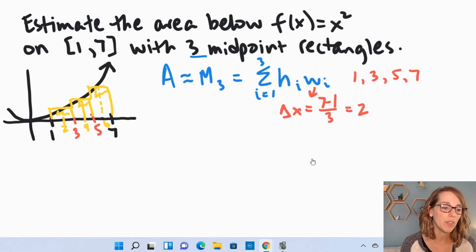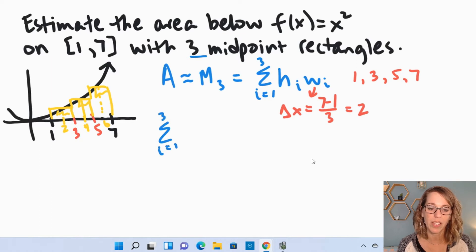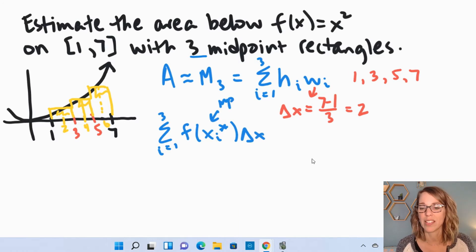So as I continue to put this into my summation, I've got i equals 1 to 3. My height is my function value, so that's going to be f of x sub i star, that's my sample point. This is going to be midpoints for this example, and then delta x. Xi star are the midpoints. So my xi star are at 2, 4, and 6, where the heights are measured.